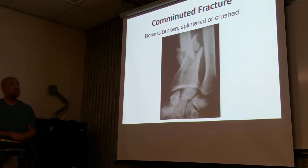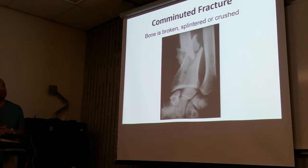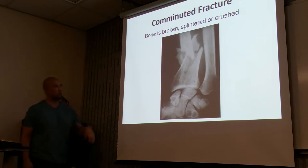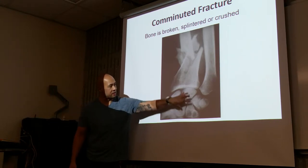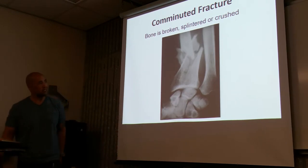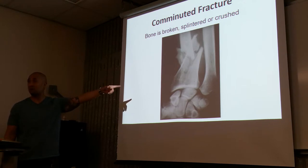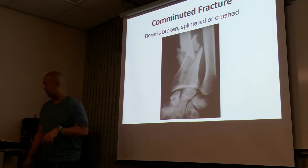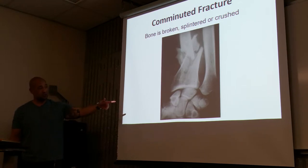Comminuted fracture — the bone is broken, splintered, or crushed into different pieces. Looking at this image — is this the foot or the arm? It's the arm, the wrist. Proper orientation of the hands should be fingers pointing upwards, so this image should be rotated so the fingers are pointing upwards. This is actually a broken radius; the picture is upside down, which can make you think it's the ankle.